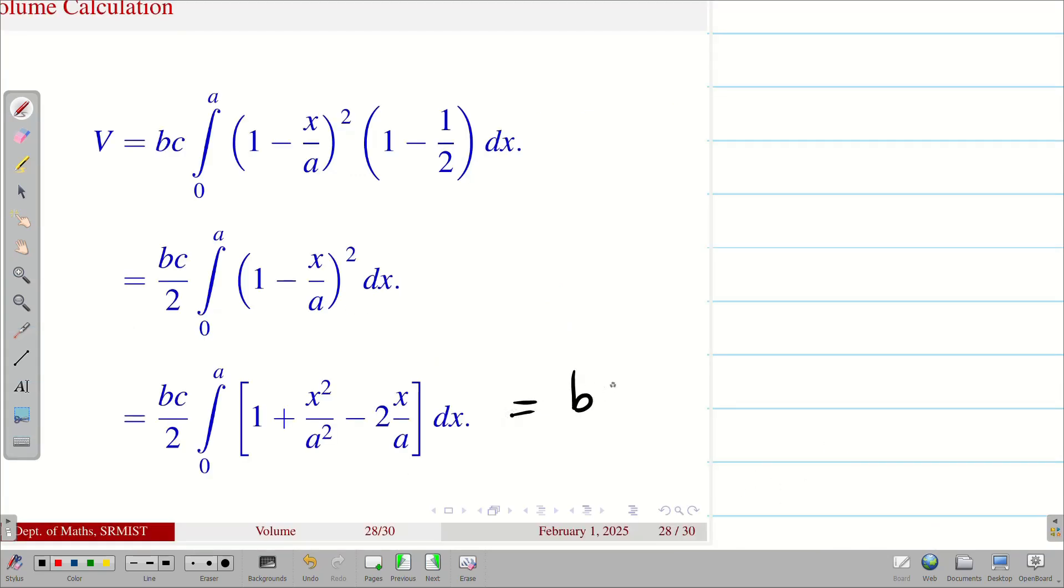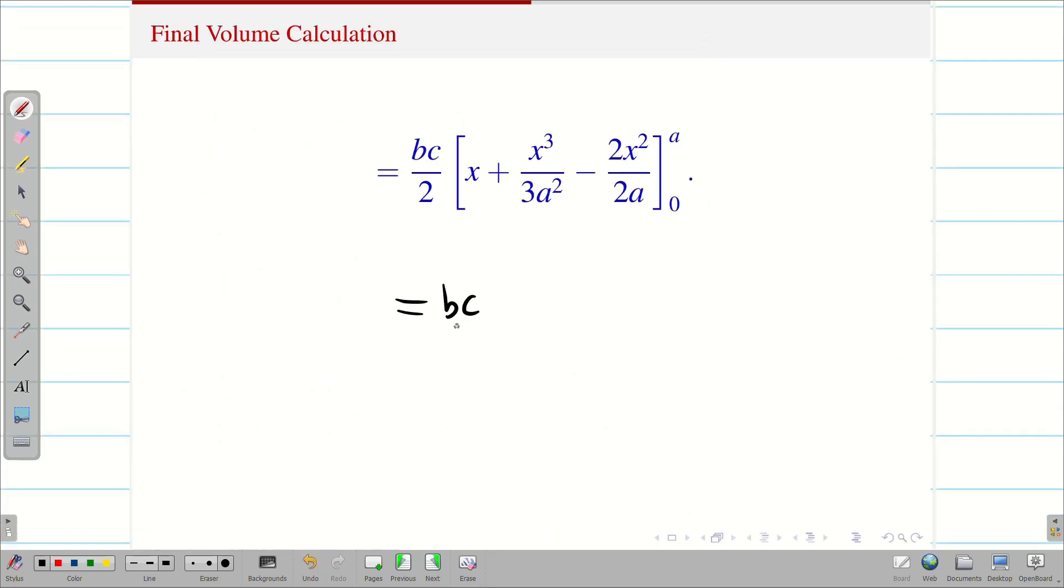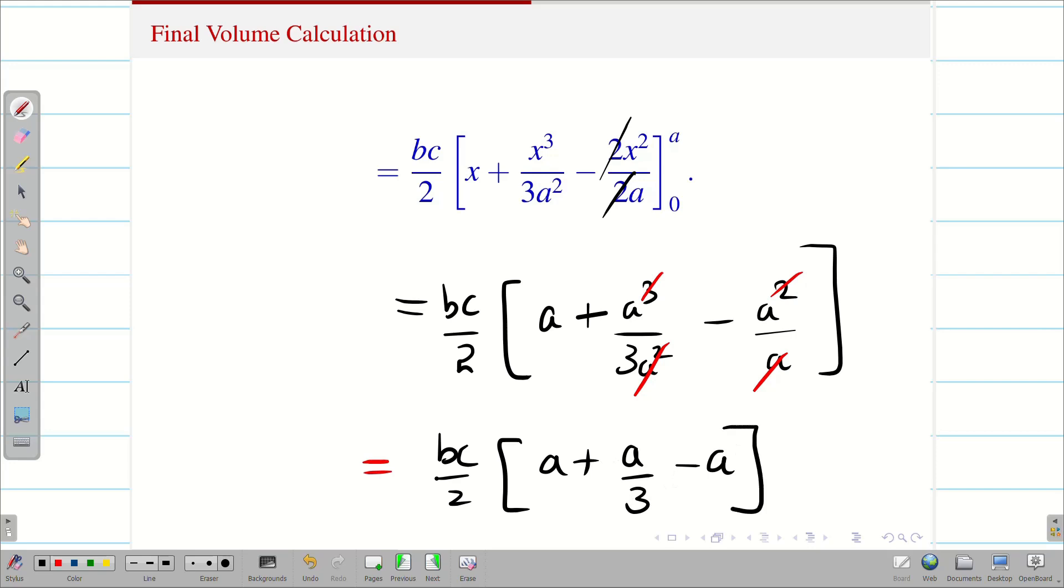Integrating this, we get bc by 2 times [x plus x cube by 3a square minus 2 times x square by 2a]. Limits are 0 to a. When I substitute the limits, bc divided by 2 times [upper limit a plus a cube by 3a square minus (the 2 gets cancelled) a square by a]. Now, I can cancel this a square with a cube and a with a square. Therefore, my final answer is bc by 2 times [a plus a by 3 minus a].